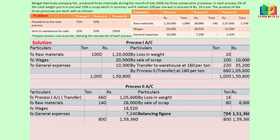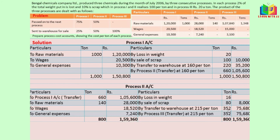This balancing figure is divided 50-50, because 50% is passed to the next process and 50% is sent to warehouse for sale. So 704 × 50% = 352 tons, and the amount is 1,51,360 × 50% = 75,680 rupees for each. The cost per ton is 75,680 ÷ 352 = 215 rupees per ton. This is transferred to process 3 account.